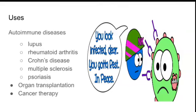The first use is autoimmune disease. These are diseases where the body forms wrong stimulation of antibodies toward its own cells. In that case we need to suppress the immune response. Autoimmune diseases include lupus erythematosus, rheumatoid arthritis, Crohn's disease, multiple sclerosis, and psoriasis. In all these cases we give immunosuppressants to suppress the immune response and avoid destruction of our own body cells.